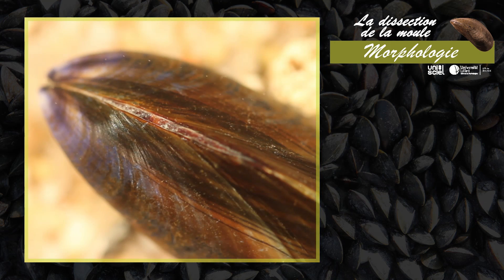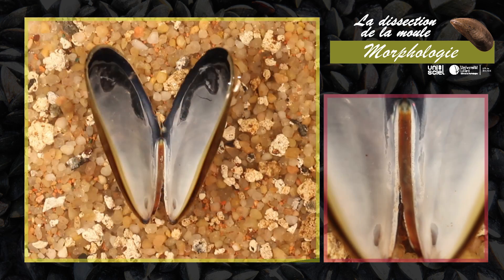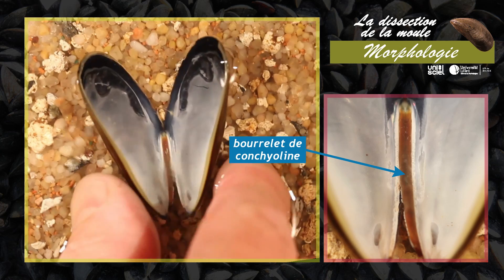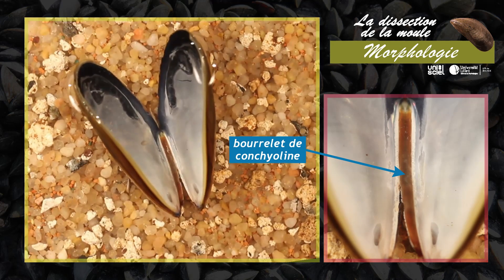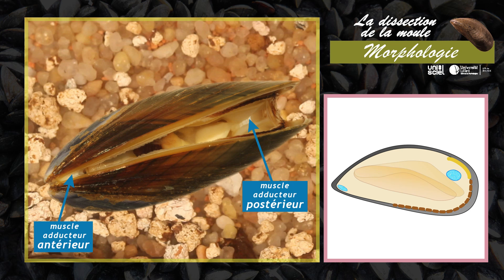Les deux valves sont unies dans la région dorsale antérieure par une charnière. Un ligament élastique interne, le bourrelet de conchioline, relie les deux valves. Il est comprimé lorsque la coquille est fermée. La contraction de deux muscles adducteurs en position antérieure et postérieure maintient les deux valves fermées.